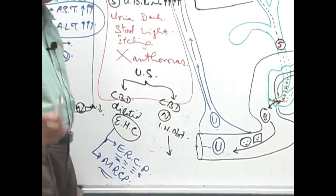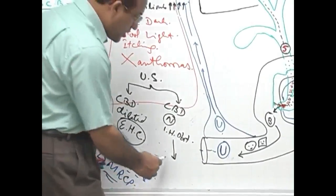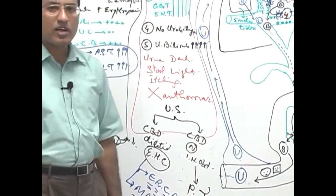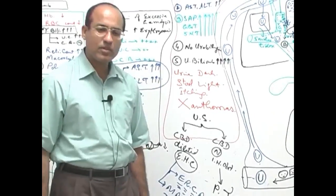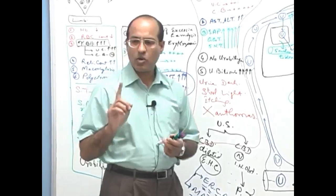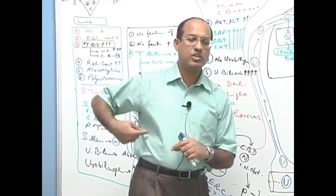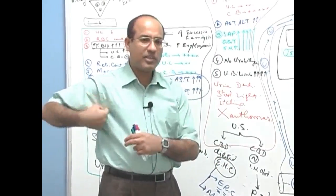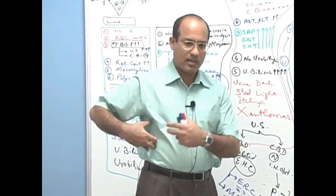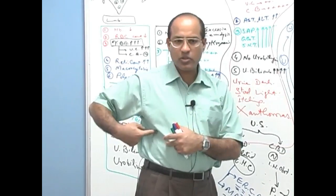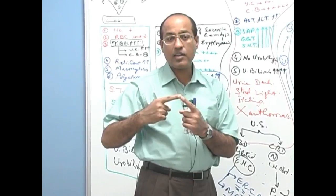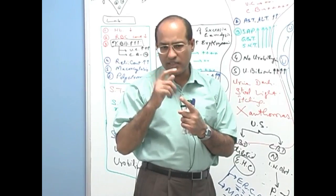PTC. What is PTC? Percutaneous trans-hepatic cholangiography. What you really do in this case that in the mid-axillary line, first you percuss out the border of liver. In the mid-axillary line, guided by ultrasound, you push a needle which should end up into some dilated radical of biliary collecting system and there you inject the dye to visualize it.